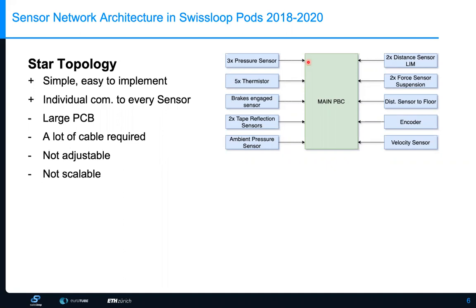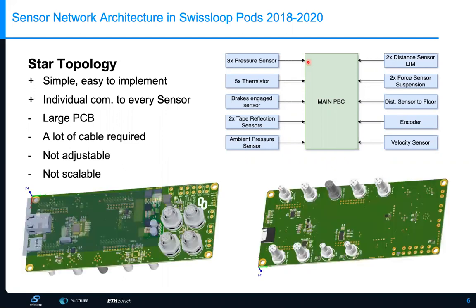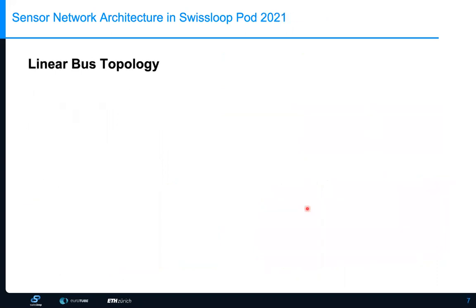To give you an example, this is the main vehicle control board we used in 2020, shown from top and bottom view. As you can see it has a lot of connectors to connect all the sensors listed here. Some sensors can be combined to a single cable, but this is not always the case.